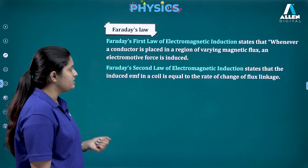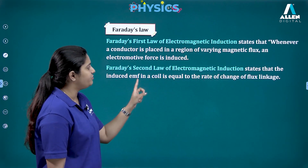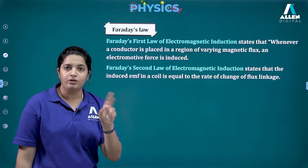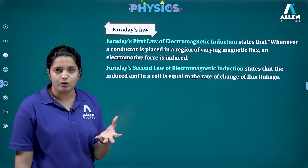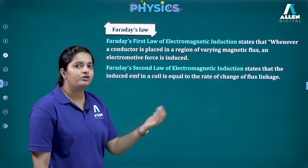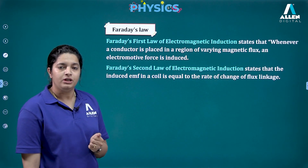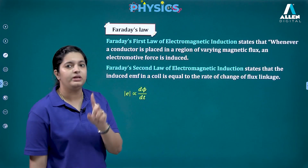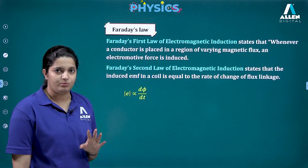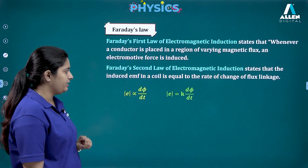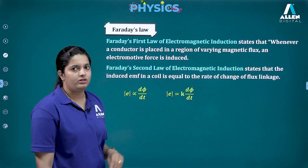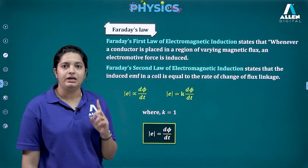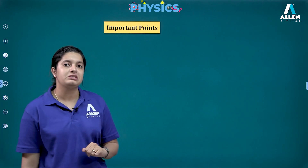Faraday's second law gives the magnitude of the induced EMF. It states that the induced EMF in a coil is equal to the rate of change of flux. Mathematically, the magnitude of E is directly proportional to dφ/dt. Removing the proportionality sign gives a constant of value one, so magnitude of EMF equals dφ/dt. Please remember Faraday's second law gives only the magnitude, not the direction. The unit of EMF is the volt.